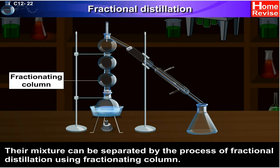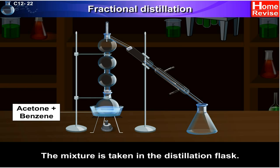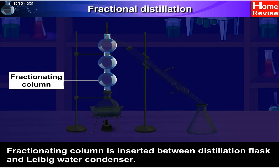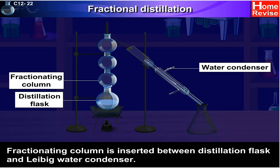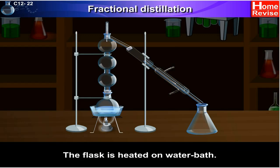Let's see how this can be done. The mixture is taken in the distillation flask. A fractionating column is inserted between the distillation flask and the Liebig water condenser. The flask is heated on a water bath.